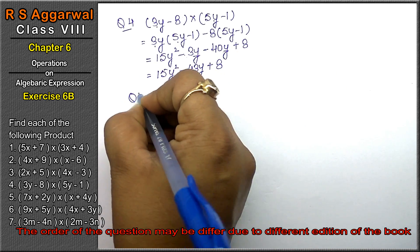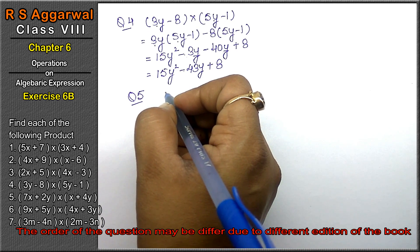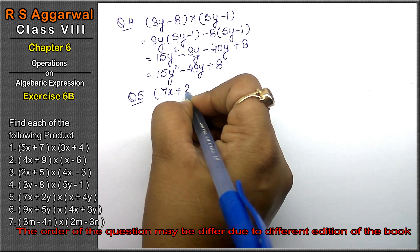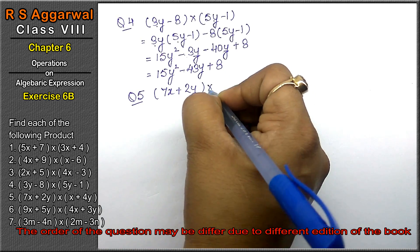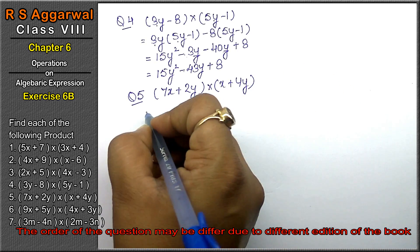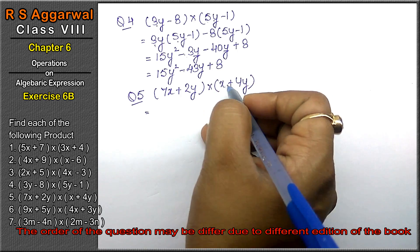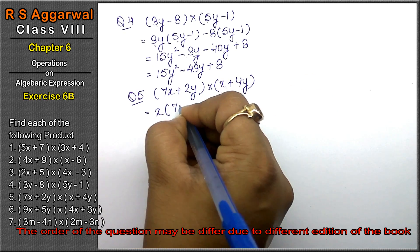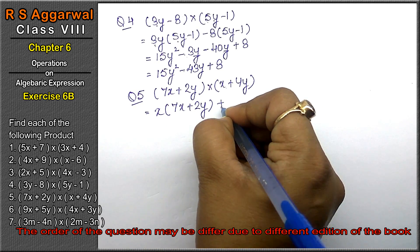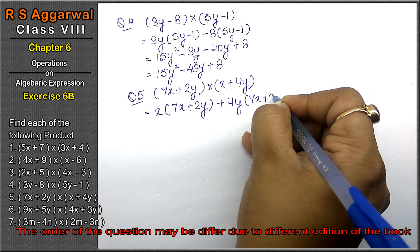Let's do question number five of Exercise 6B, that is algebraic expressions. Question number five is (7x + 2y) multiplied by (x + 4y). As I told you, this can also be written as: x multiplied by (7x + 2y), plus 4y multiplied by (7x + 2y).